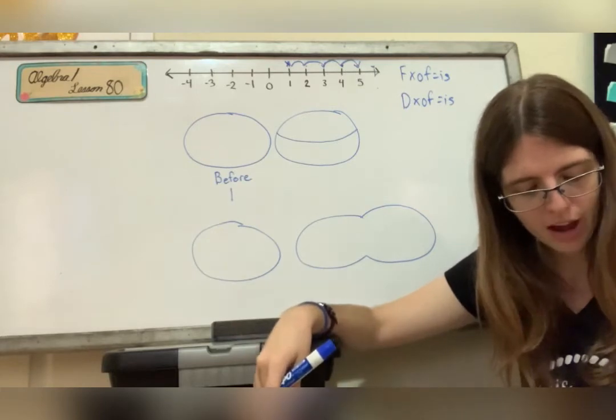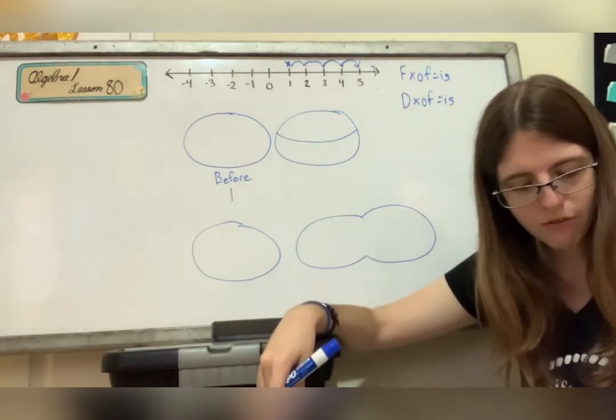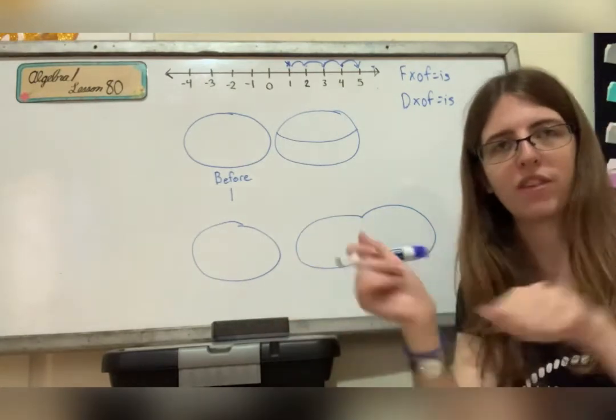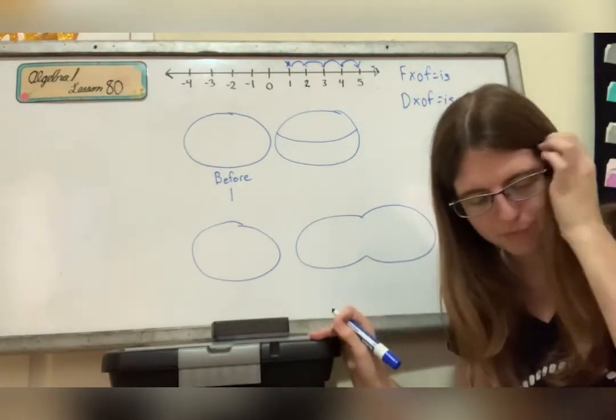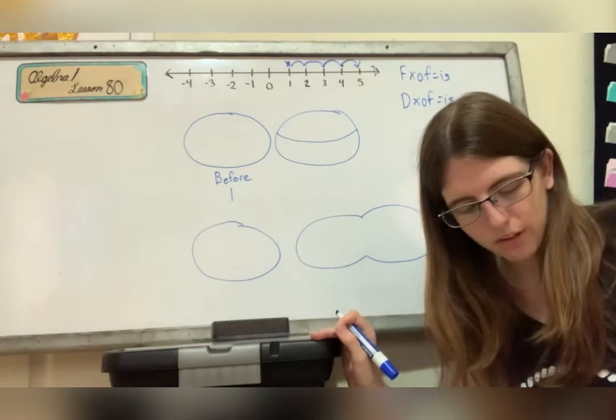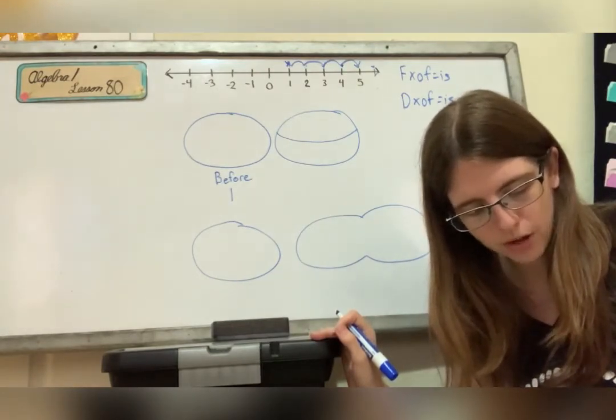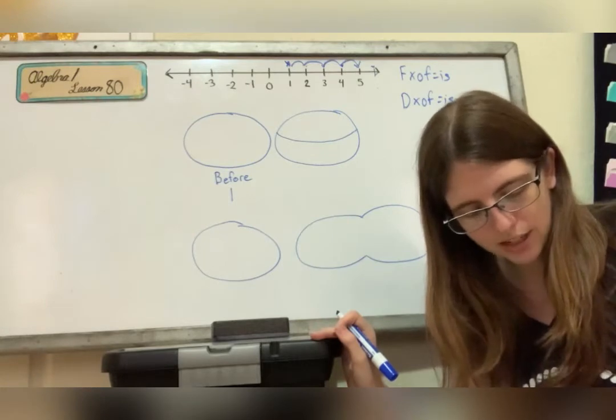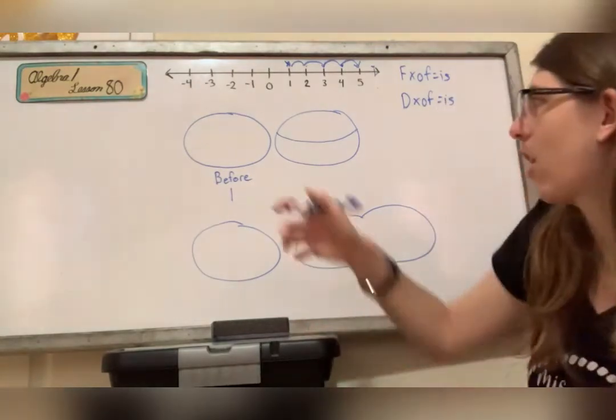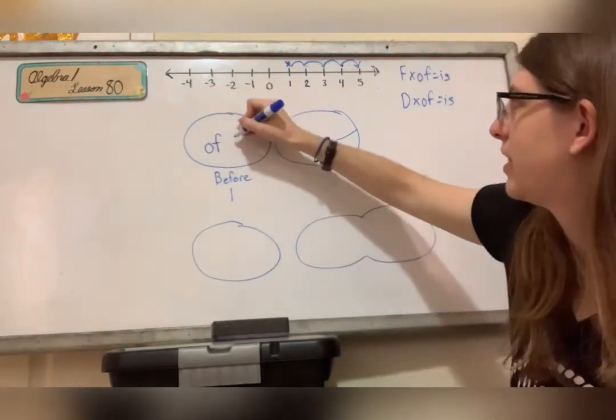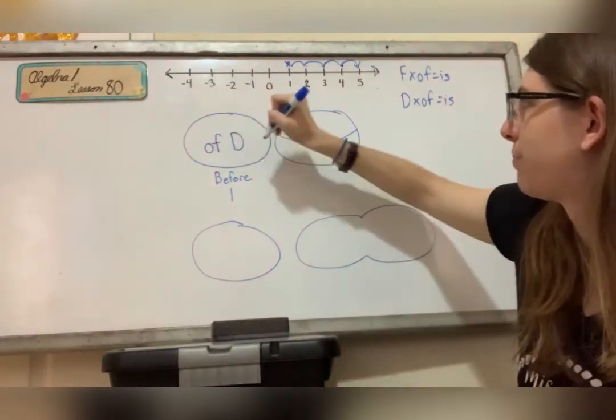So let's look at a problem. Lopez used a five iron, but the ball covered only four fifths of the required distance. Five iron is a type of golfing club. But the ball covered only four fifths of the required distance. If she hit the ball 112 yards, what was the required distance? So we see that our of number is the distance, the required distance.